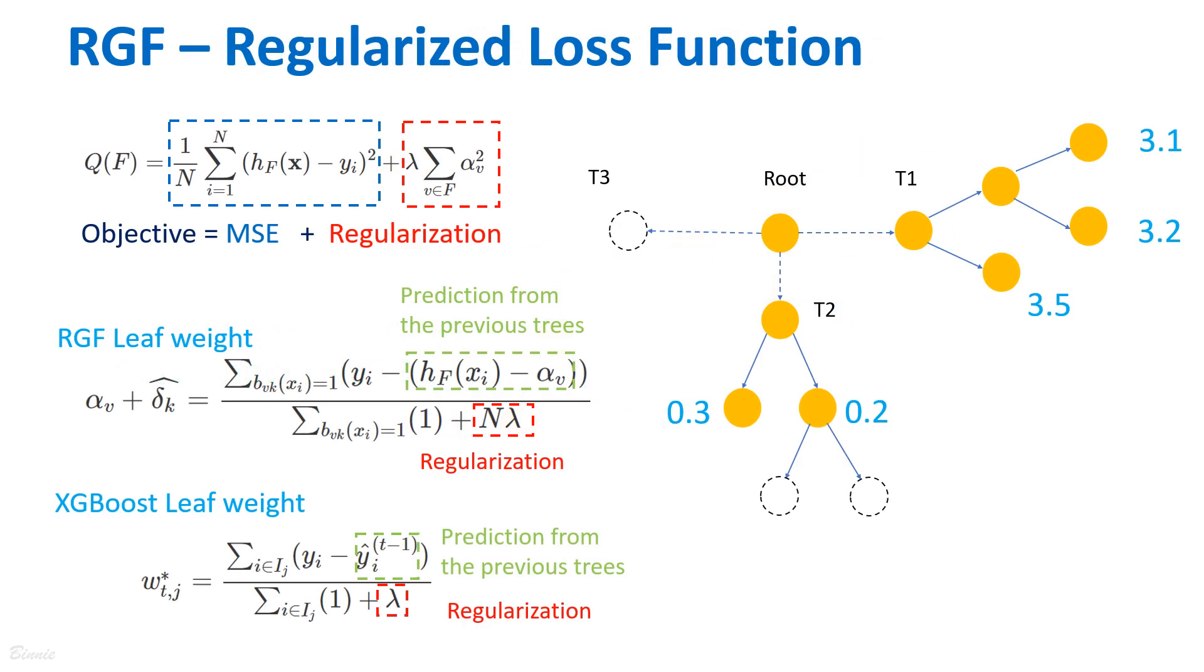As mentioned before, RGF has also considered the regularized loss function to avoid overfitting. Intuitively, the optimum weight in the leaf of XGBoost is similar to the optimum weight in the leaf of RGF, which considers the difference between the actual target and the prediction from the previous trees.